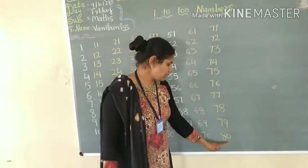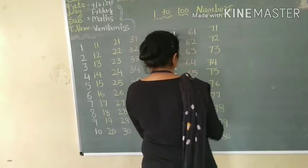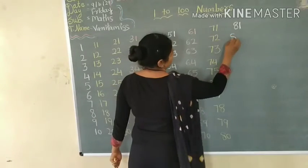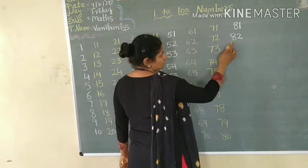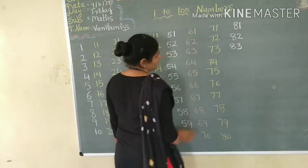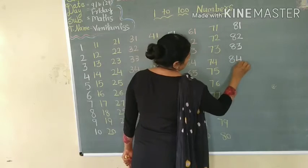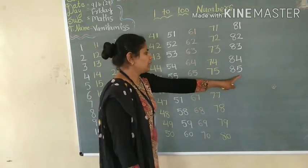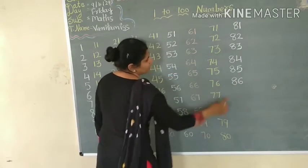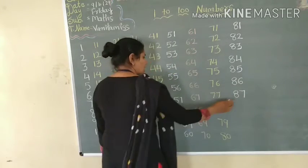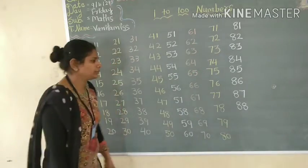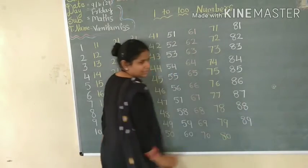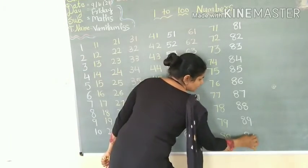After 80, which number comes? 81. After 81 is 82. And the next number is 83. After 83 is 84. Next number is 85. After 85 is 86. And 87. After 87 is 88. After 88 is 89. And which number comes after 89? 90.